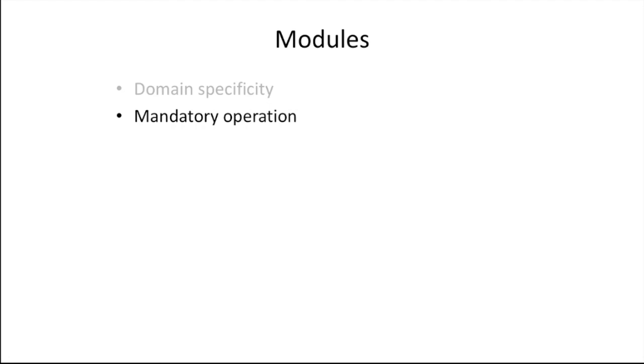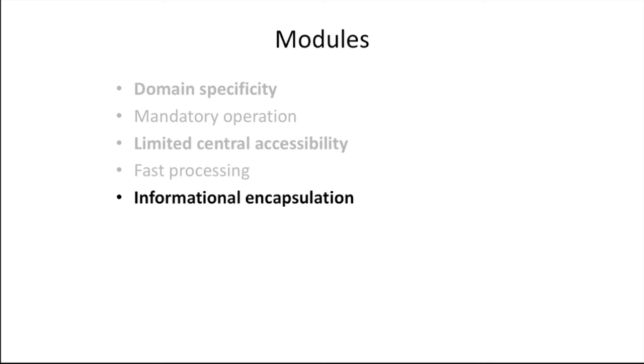Also, central systems have little or no access to the information inside the modules. So that, from the central system point of view, modules are black boxes, so to speak. Fast processing is something that also characterizes modules in Fodor's view. Think about how long it takes you to understand the sentences I'm uttering or the visual scene before you. It takes you in the order of milliseconds, which is almost instantaneous, especially when you compare it with conscious problem solving. Modules also tend to have limited accessibility to the central system. This means that they operate according to their own processes and information and can't make use of information that is centrally held, such as beliefs.